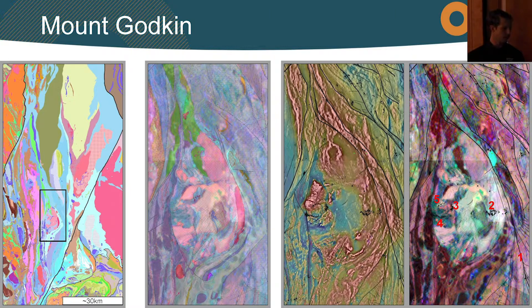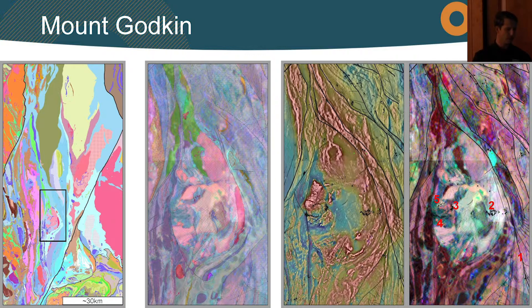Mount Godkin is one of these areas - it's really quite interesting. It's part of the Wonga batholith suites. Straightaway we found that the Mount Godkin granite is mapped as an undivided unit, but if you look at the second image you can see the magnetics in the background with the geology overlaying - you can actually see quite a bit of difference there. The radiometrics on the right are for reference, and all of these light pink and light green zones are all mapped as a homogeneous unit, yet you can see quite a bit of difference. In the magnetic image there's quite a lot of high magnetic intensity short-wavelength features, indicating quite a lot of structure.